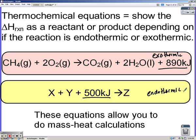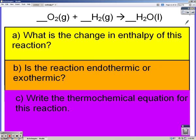When you have an equation like this you can do a mass to heat calculation. So the first part in A wants to know what's the change in enthalpy of this reaction. Before you can solve this problem you're going to need a balanced equation.